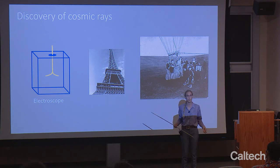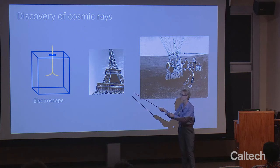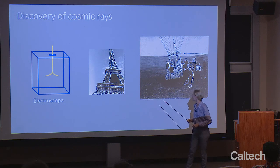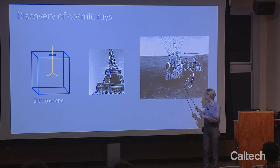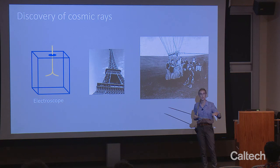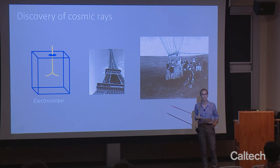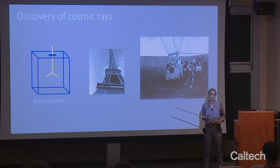Then they thought maybe it was coming from the ground — background radioactive materials in the Earth. So they took electroscopes up a tall building, and it still discharged. They took it up a taller building, which had fortunately just been built around that time. And then finally, Victor Hess took these up in a hot air balloon. He noticed that at some point above the Earth's surface, the radiation the electroscopes were measuring began to increase with height — more and more as you got higher in the atmosphere. He realized this stuff was coming from outer space and called it cosmic rays.